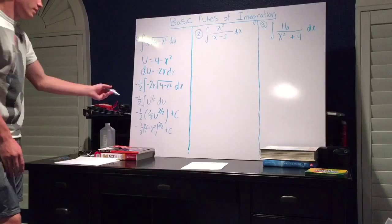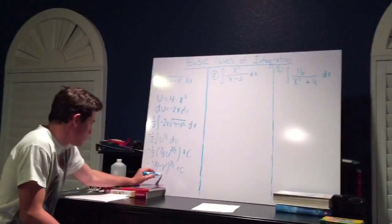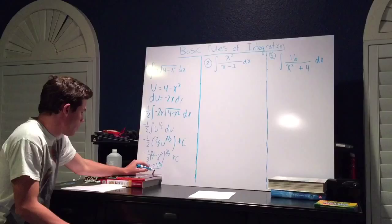And then once again, multiplying negative 1 half times 2 thirds, we'll get negative 1 third times 4 minus x squared to the 3 halves, don't forget the negative, plus c.